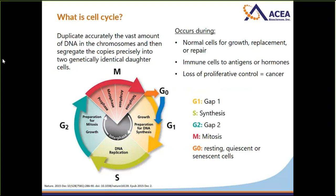What exactly is the cell cycle? It duplicates accurately the vast amount of DNA in the chromosomes and then segregates the copies precisely into two genetically identical daughter cells. This occurs during normal cell growth, replacement, or repair, or when immune cells are exposed to antigens or hormones, or in cases like cancer where cells have lost proliferative control. Following cell division or mitosis, the cell enters G1 phase where cellular growth occurs, including replication of organelles, followed by the S phase where DNA is duplicated, then G2/M phase for rapid cell growth and protein synthesis to prepare for mitosis, producing two identical daughter cells.